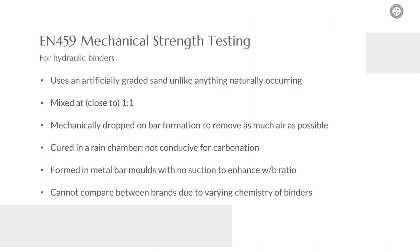Looking at how this mechanical strength testing is undertaken: you take your binder and you use an artificially graded sand, which is mixed at pretty much one-to-one, which is then placed into moulds and then dropped on a reciprocating arm in order to remove as much air as possible. These bars are kept at high humidity and then they are demoulded and placed into a rain chamber. This is only looking at the hydraulic element of these binders, as a rain chamber is not particularly conducive for carbonation, being too wet.